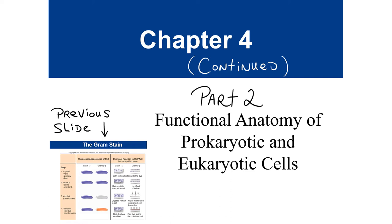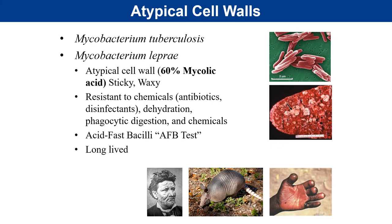This is the second half of Chapter 4, continuing coverage of functional anatomy of prokaryotic and eukaryotic cells. The first part ended covering the gram stain, which identifies roughly 95% of medically important bacteria as either gram positive or gram negative. We have to look at the other 5% — bacteria that possess atypical cell walls.